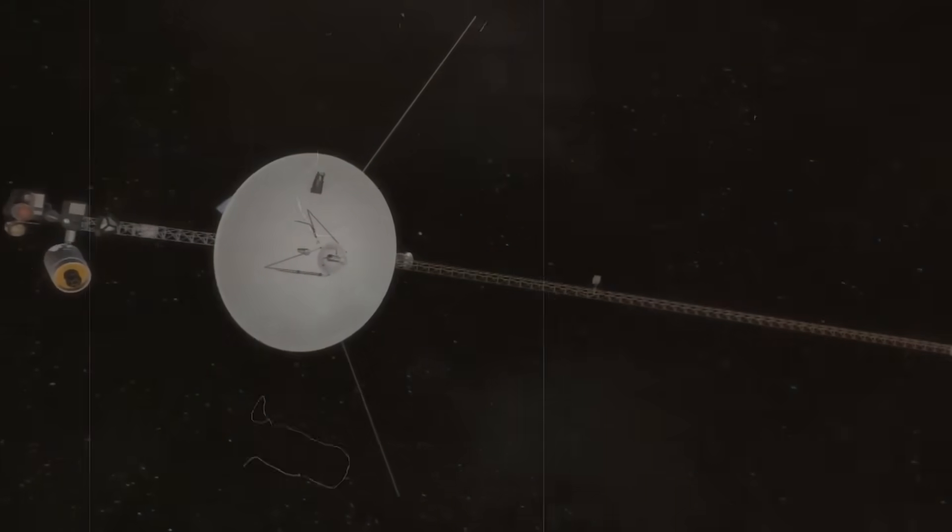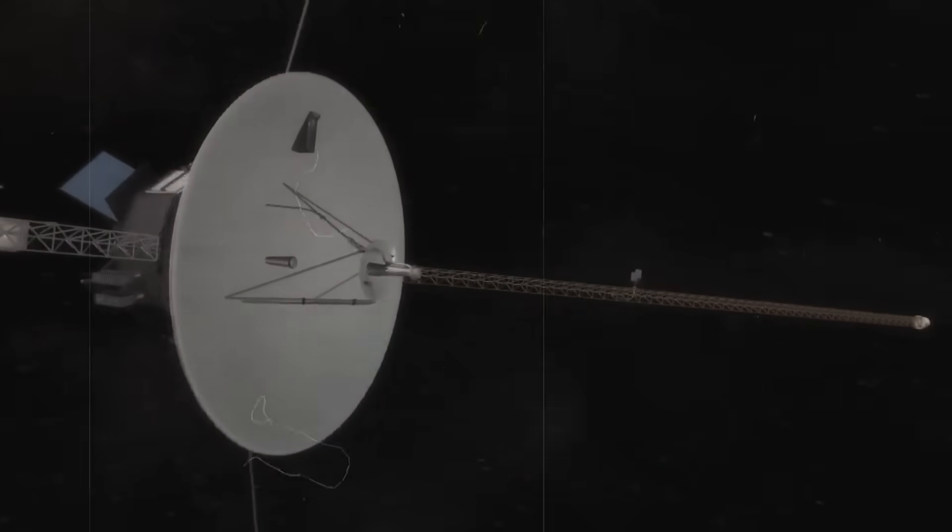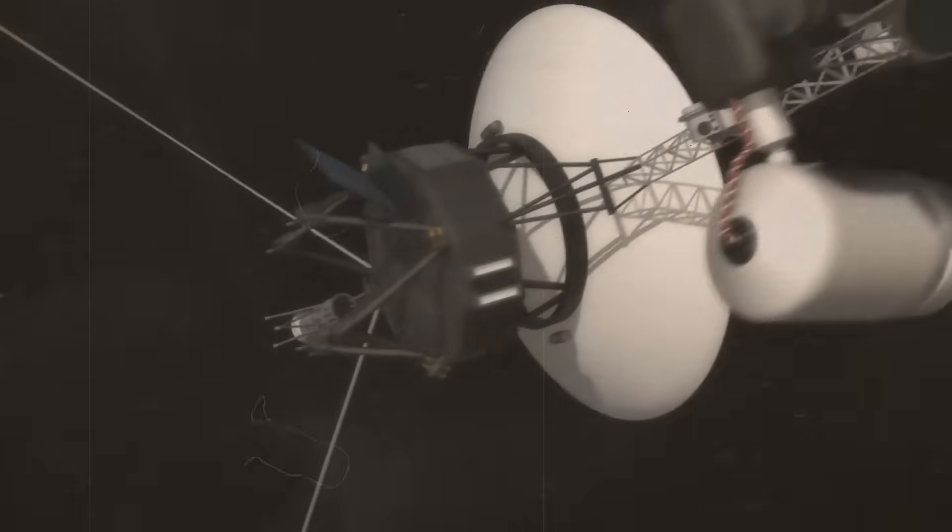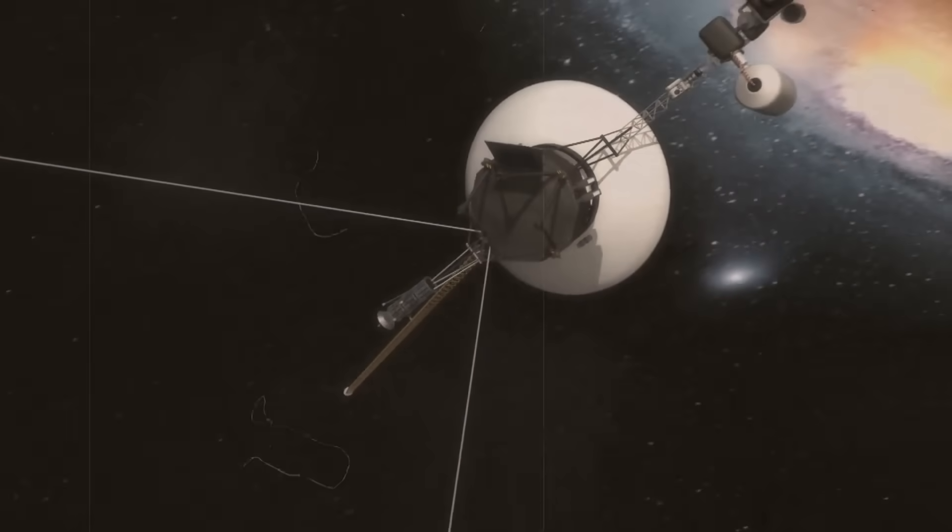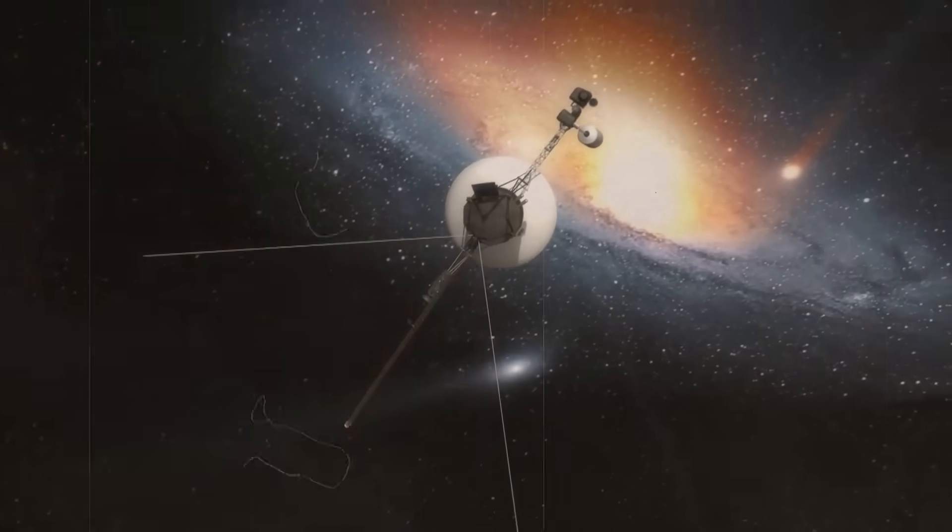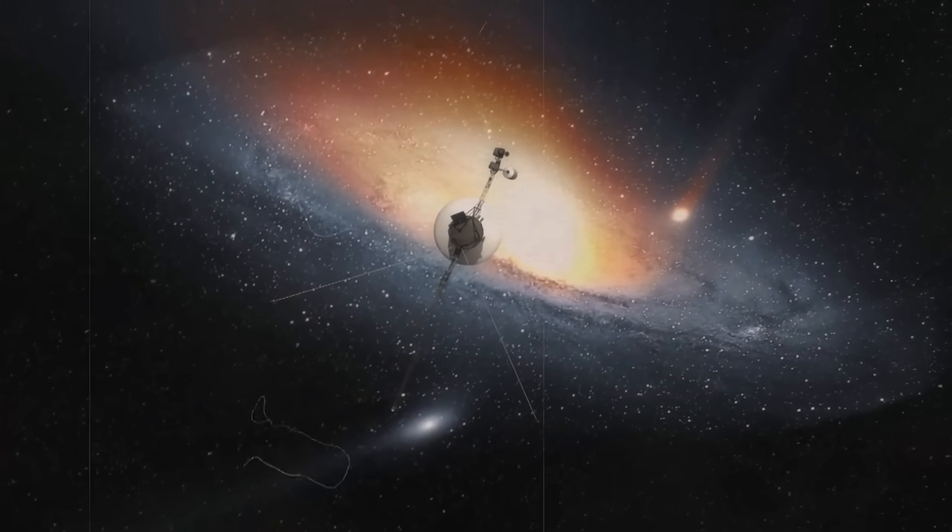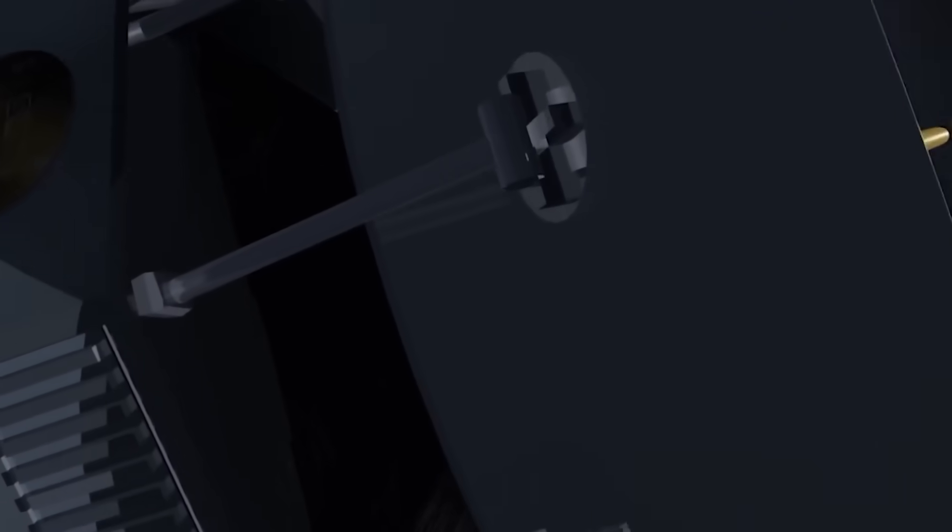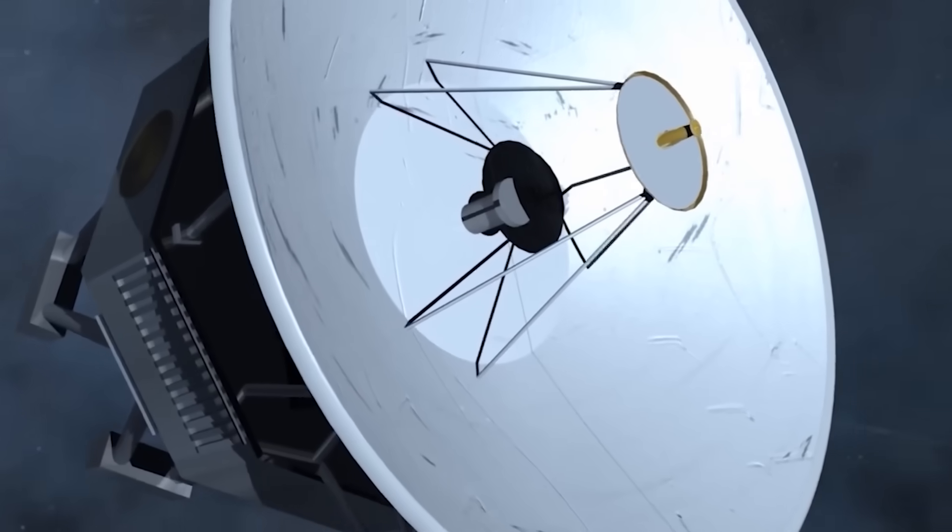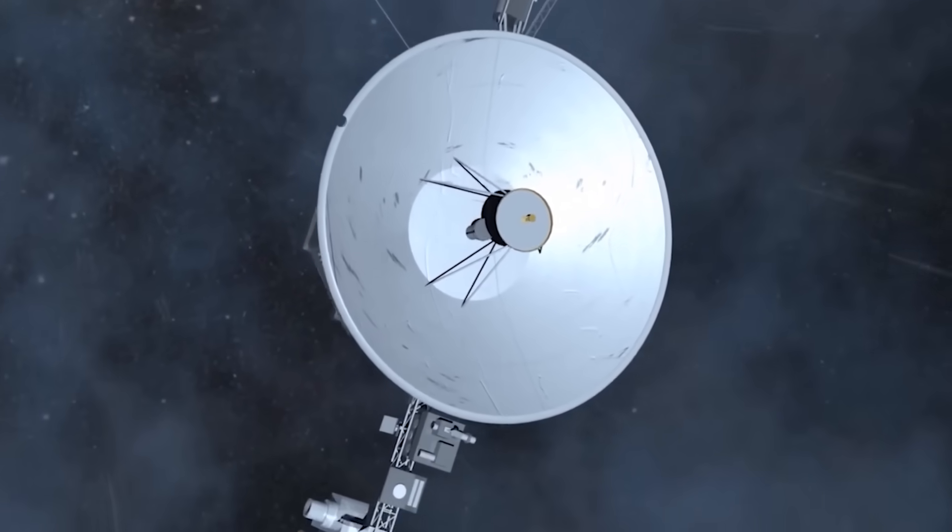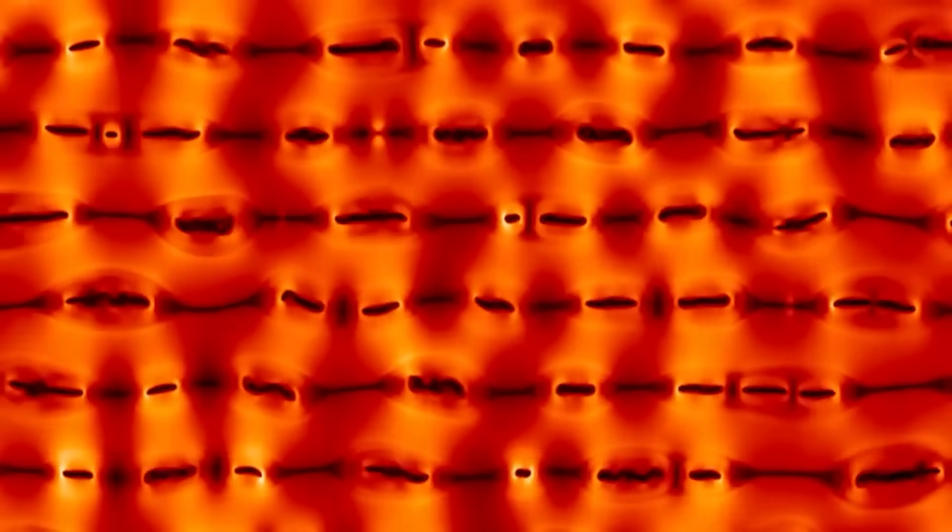Voyager 2 is still transmitting data from its five active instruments as it navigates through interstellar space as of July 2019. Additionally, it is anticipated that at least one of the spacecraft's instruments will continue to function until 2025. But regrettably, there will come a moment when there won't be enough power to run even one experiment on the spaceship. Voyager 2 will continue its silent, unending voyage across the stars in this manner. It will be nearly 40,000 years before it approaches another star.